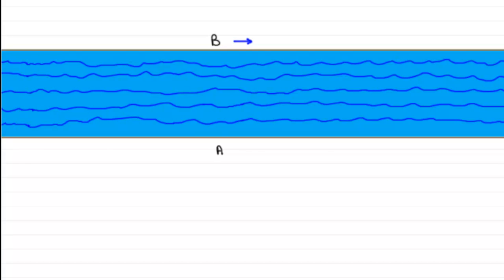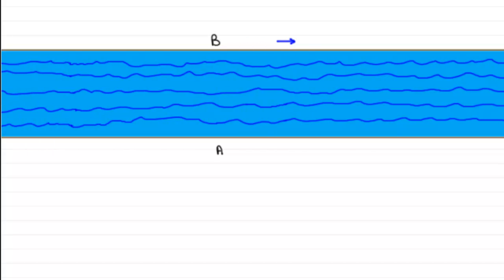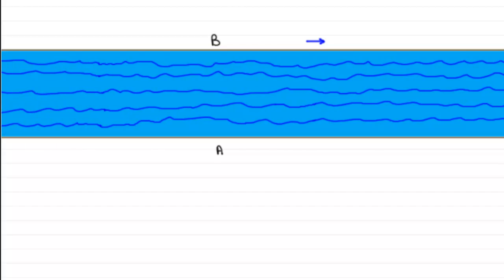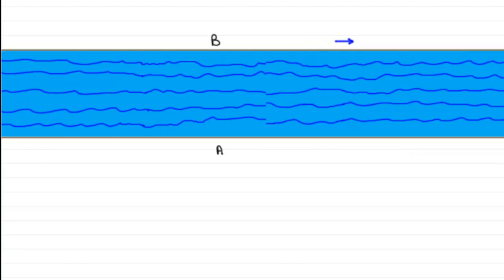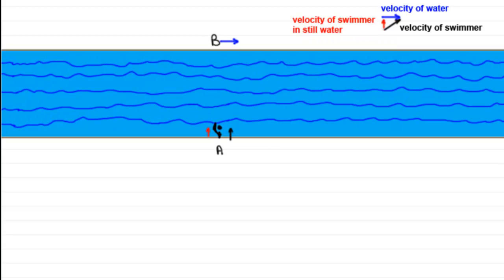So why is this? Well, if we look at the swimmer's velocity when he is swimming in still water, illustrated by this red vector, we saw earlier that he had no problem swimming across the river from A to B in still water. But then when we had the current moving from left to right, illustrated by this blue vector, then when the swimmer wanted to swim across the river,